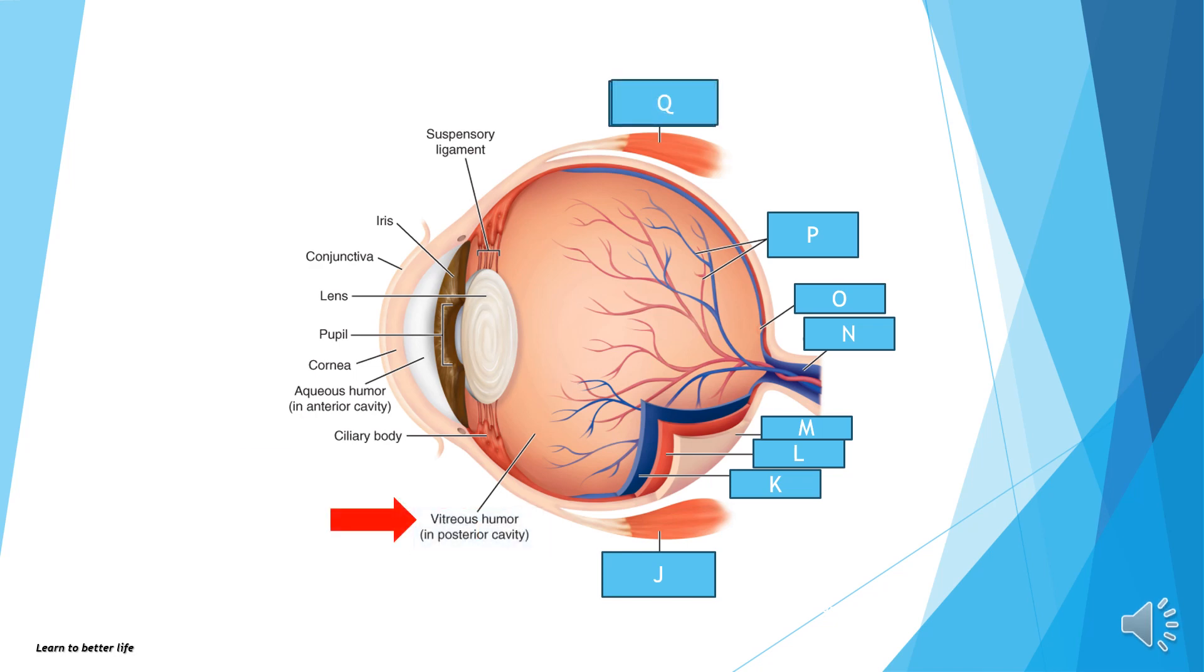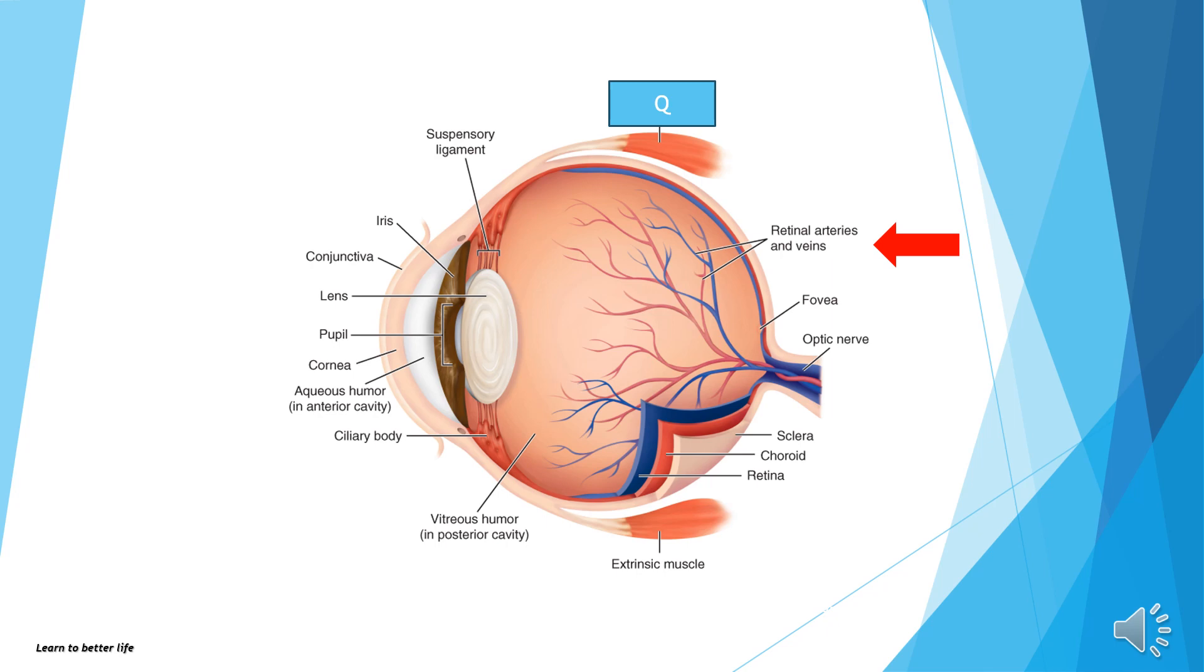I is vitreous humor in the posterior cavity. J is the extrinsic muscle. K is the retina. L is the choroid. M is the sclera. N is the optic nerve. O is the fovea. P is the retinal arteries and veins. And Q is also the extrinsic muscle. Make sure you know all of these structures.